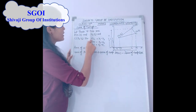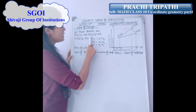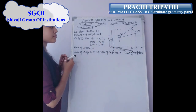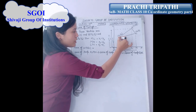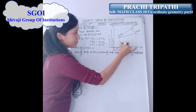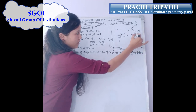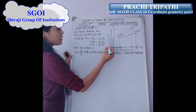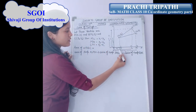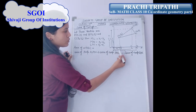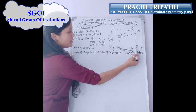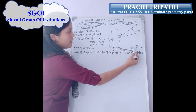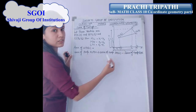Let the three vertices be A(x1, y1), B(x2, y2), and C(x3, y3) of triangle ABC. Now draw perpendiculars from B to M, from A to L, and from C to N. MN is equal to x1 minus x2. ML is equal to x3 minus x2, and LN is equal to x3 minus x1.